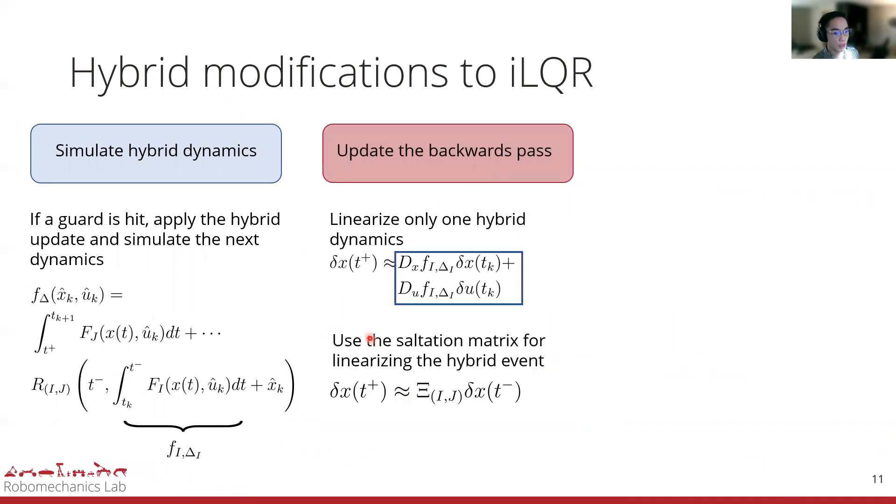On the backwards path, as an approximation, we linearize only about one of the hybrid dynamics during an impact. This approximation is arbitrary, but leads to a piecewise smooth control law which helps with convergence. Then we use the saltation matrix to update the linearization about the hybrid event.